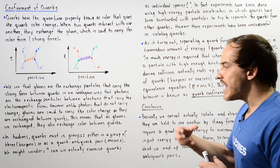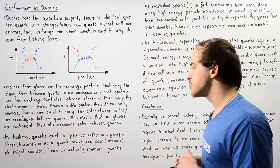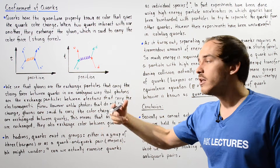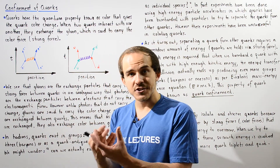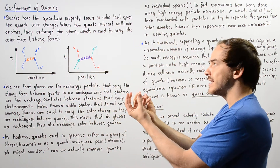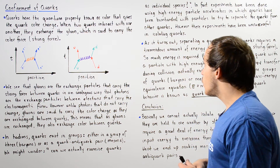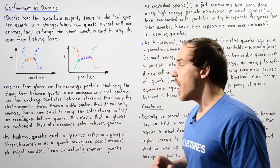We might wonder: do quarks actually exist as individual particles? Can we take a quark from within a proton, isolate it, and examine it experimentally? Experiments have been done using high-energy particle accelerators in which quarks have been bombarded with particles to try to separate and isolate them. However, these experiments have been unsuccessful. This is because separating a quark from other quarks requires a tremendous amount of energy, as quarks are held together by the strongest force in nature — the strong nuclear force, or color force.